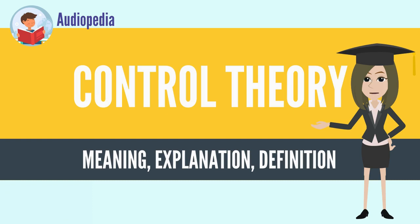Control theory dates from the 19th century, when the theoretical basis for the operation of governors was first described by James Clerk Maxwell. Control theory was further advanced by Edward Routh in 1874, Charles Sturm, and in 1895,